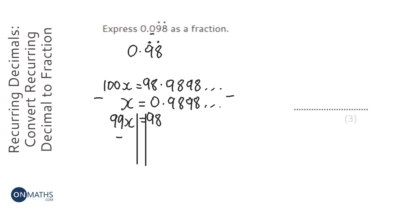So divide both sides by 99. You get x equals 98 over 99.